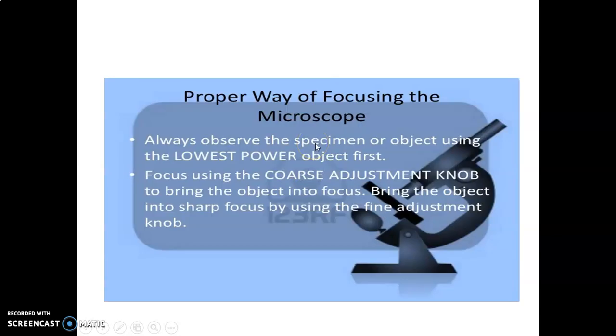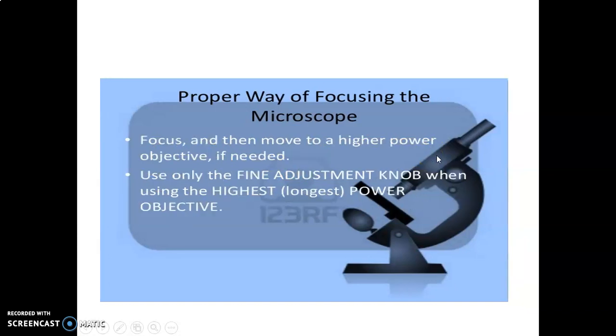You have to make sure that you observe your specimen first using low power. You start with the coarse adjustment knob before you get to fine-tune with the fine adjustment knob, but you have to start with the lowest power, times four, before you go to times ten, times forty, then times one hundred.